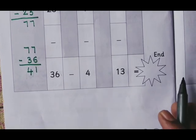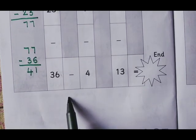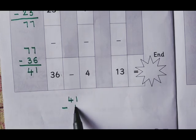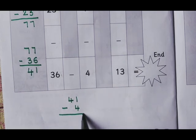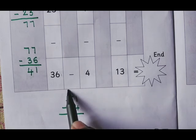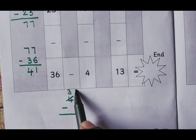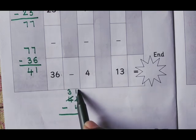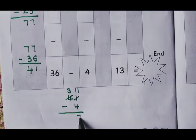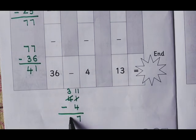Now from 41 we have to subtract 4. Here we will do rough work. 41 minus 4. 1 minus 4 we can't do, so we have to borrow from the tenths place. 3 tenths, 1 tenth plus 10 units plus 11 units. 11 minus 4 is 7. And here 37.